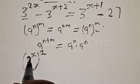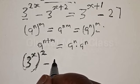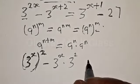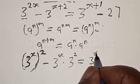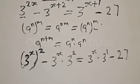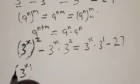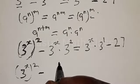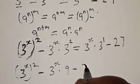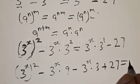From this, we have 3 raised to the power x all squared, minus 3 raised to the power x multiplied by 3 raised to the power 2, minus 3 raised to the power x multiplied by 3 raised to power 1, minus 27. Now let's equate everything to zero. We have 3 raised to the power x all squared, minus 3 raised to the power x multiplied by 9 — that is 3 squared.